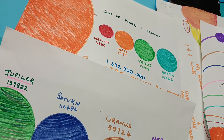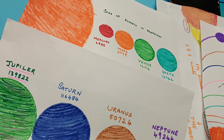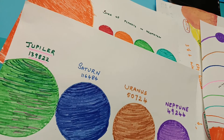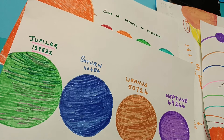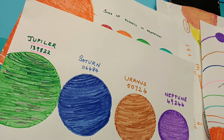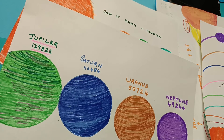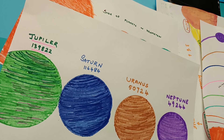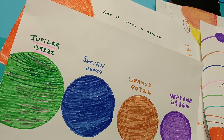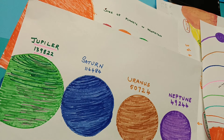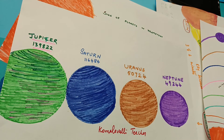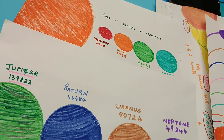Continuing from smallest to largest: Neptune is 49,244 km, Uranus is 50,724 km, Saturn is 1,16,484 km, and Jupiter is 1,39,822 km. So you understand the relative sizes of the planets, and you can ask children activities based on comparing these sizes.